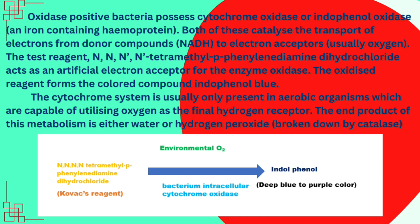Usually, this cytochrome system is present in aerobic organisms. The final end product is either water or hydrogen peroxide. When the reagent — N-N-N'-Tetramethyl-P-Phenylenediamine Dihydrochloride — is added in the presence of oxygen, bacteria with intracellular cytochrome oxidase produce indophenol, which appears as a deep blue to purple color change.